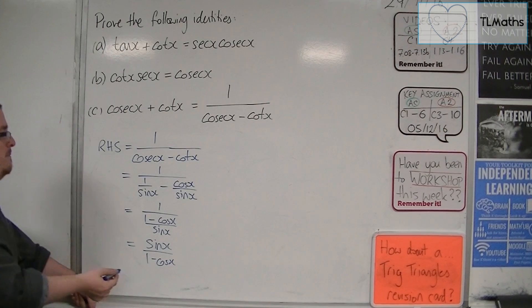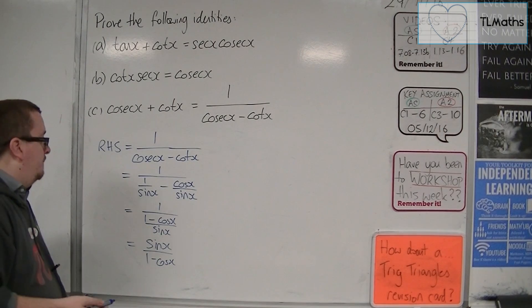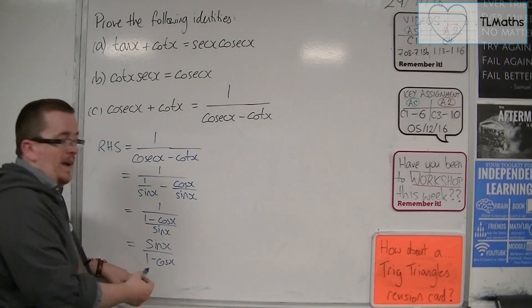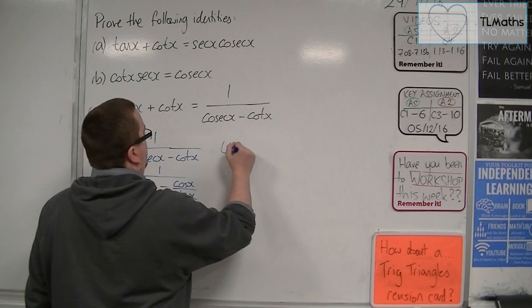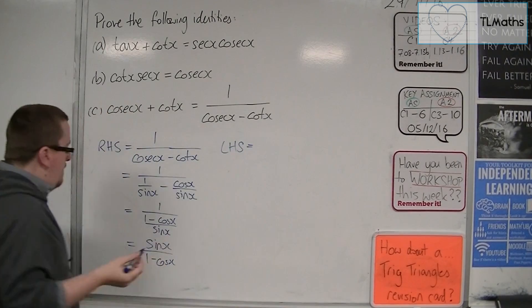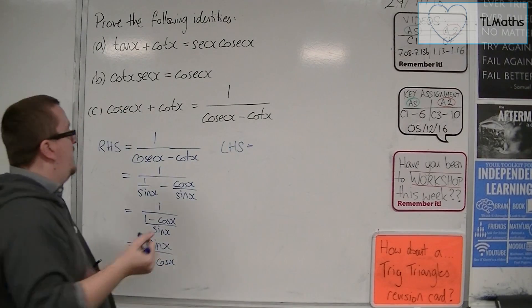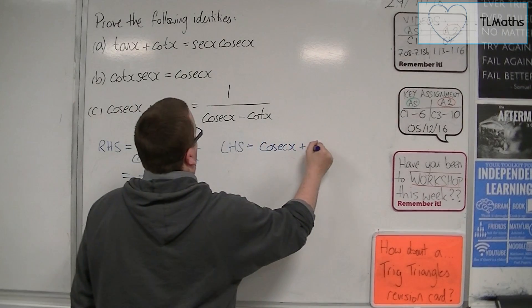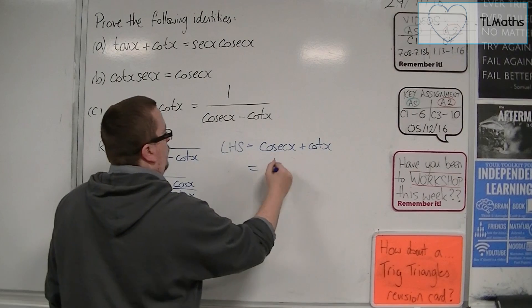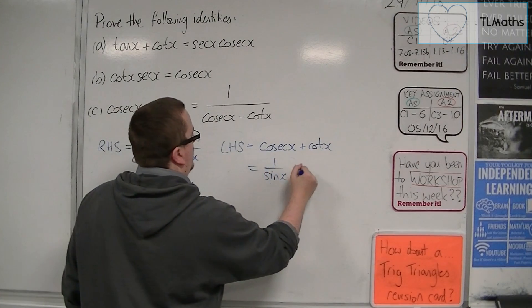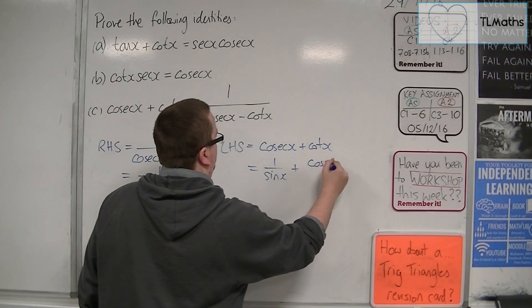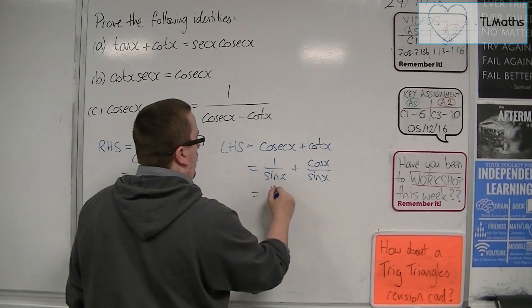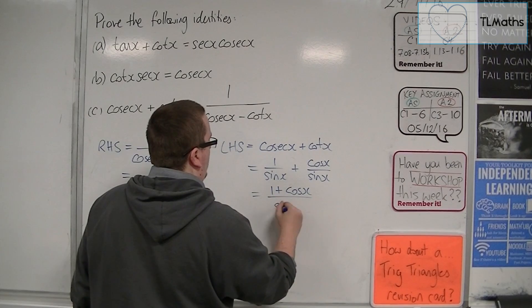Now at this stage, there doesn't seem to be much that we can really do with that. So failing to really move anywhere from that point, let's now have a look at the left-hand side. And maybe we can get the left-hand side to be equal to the right-hand side. So cosec x plus cot x. So that's one over sine plus cos over sine. And that gives us one plus cos x over sine x.